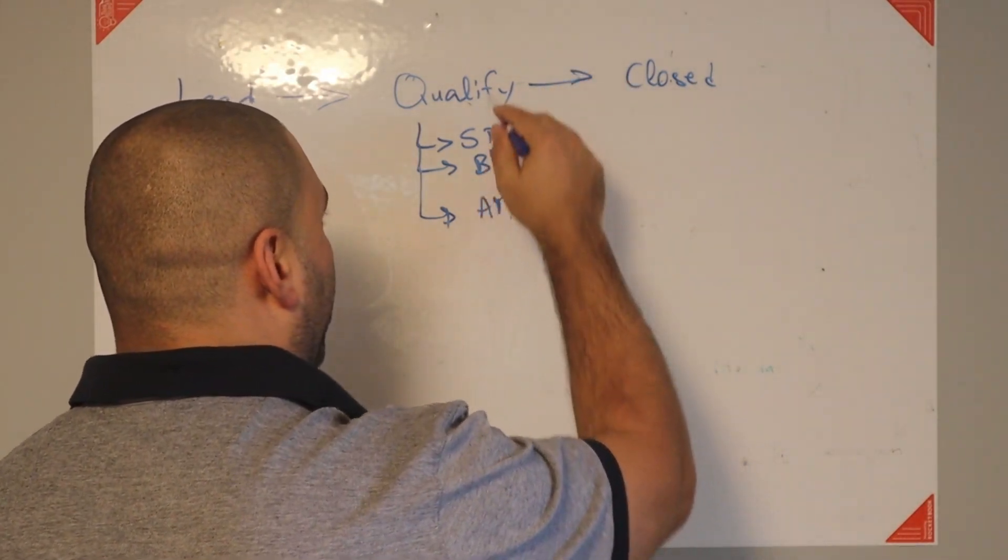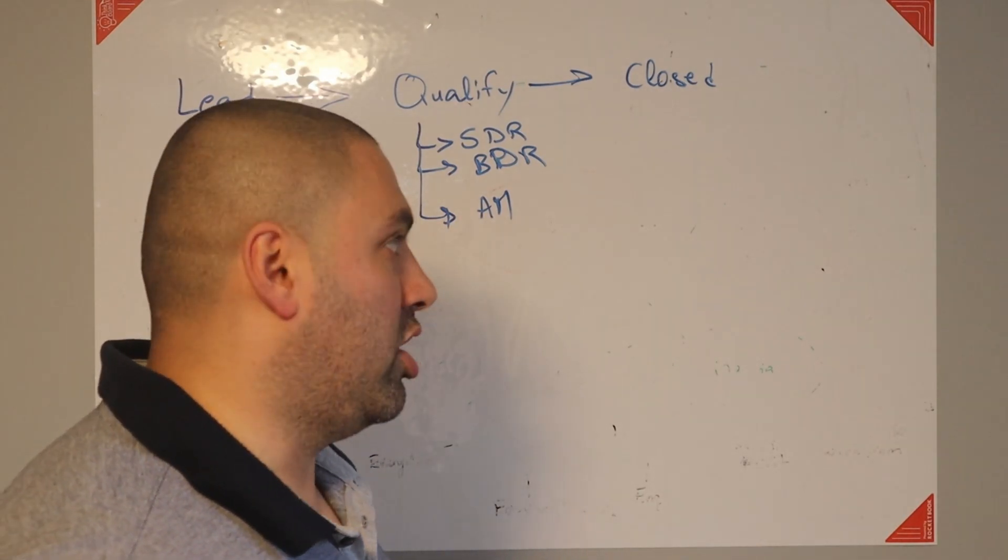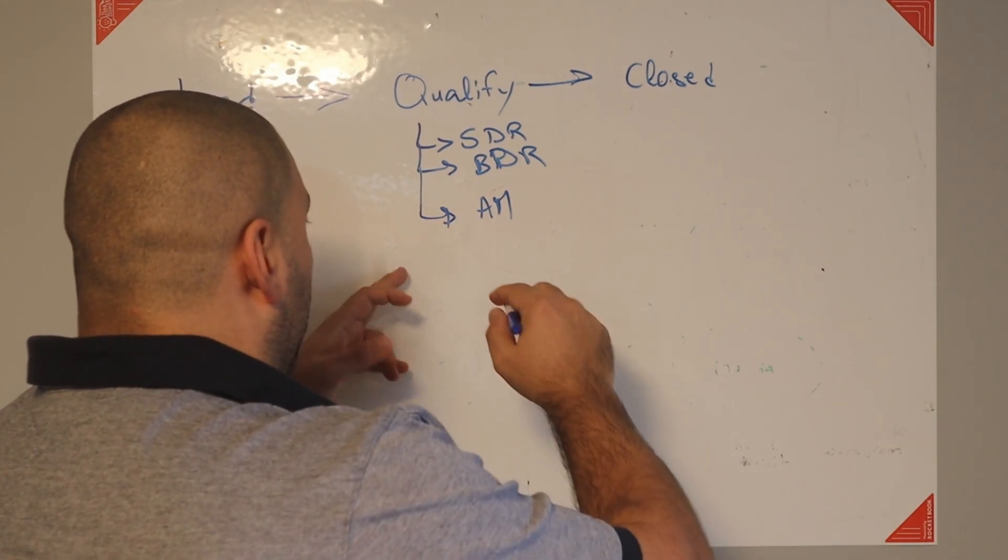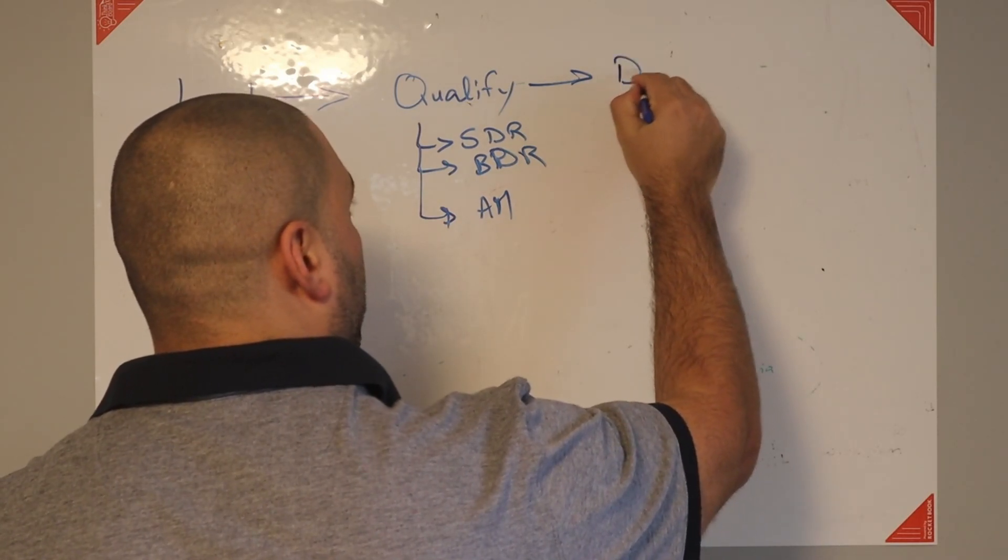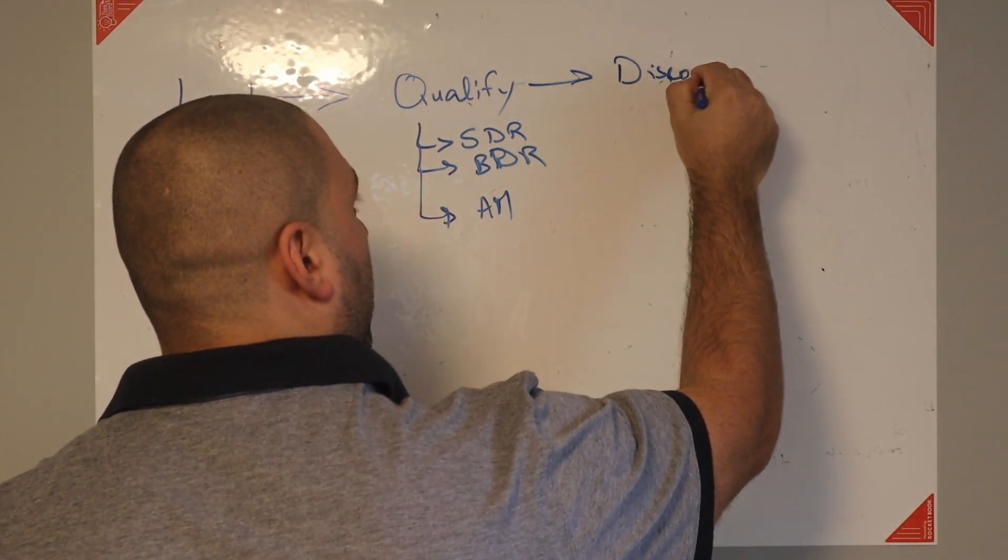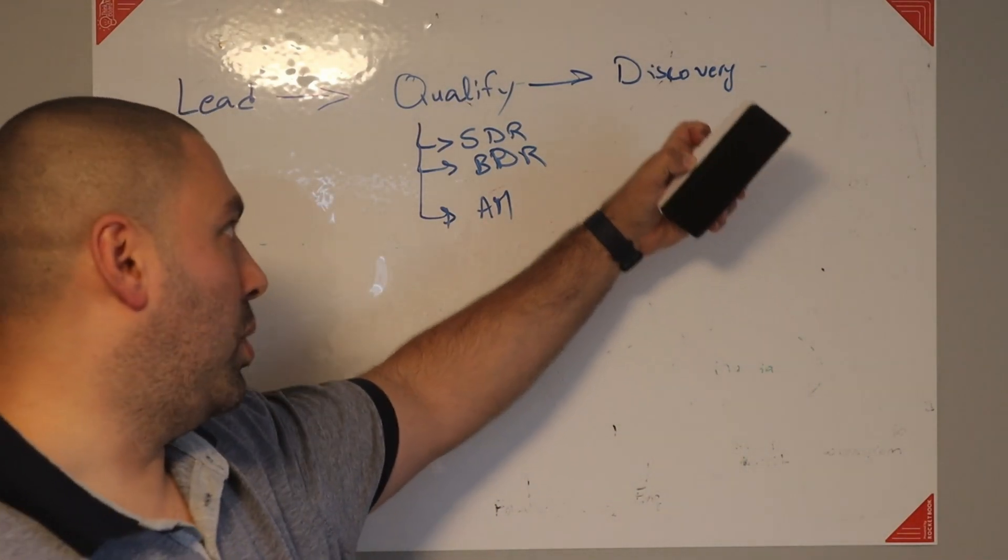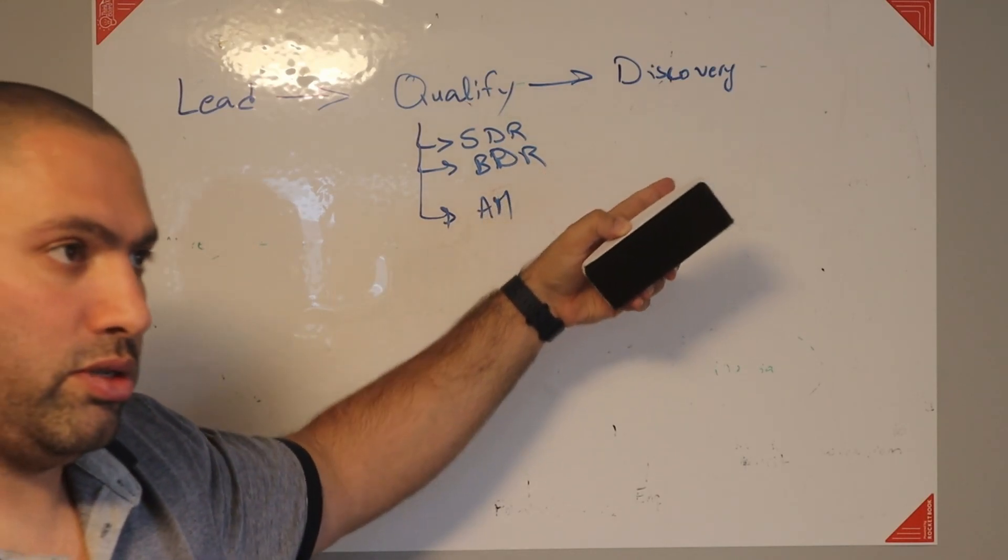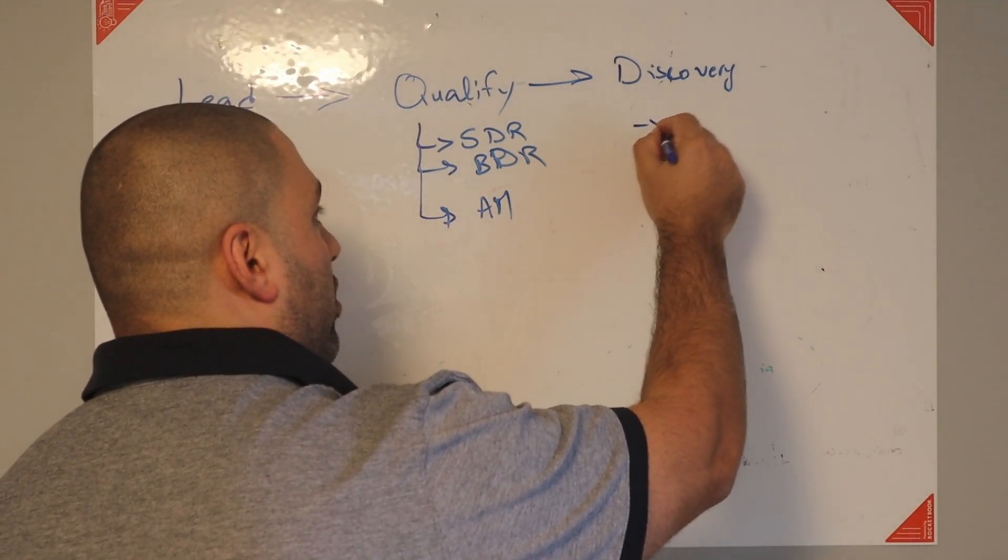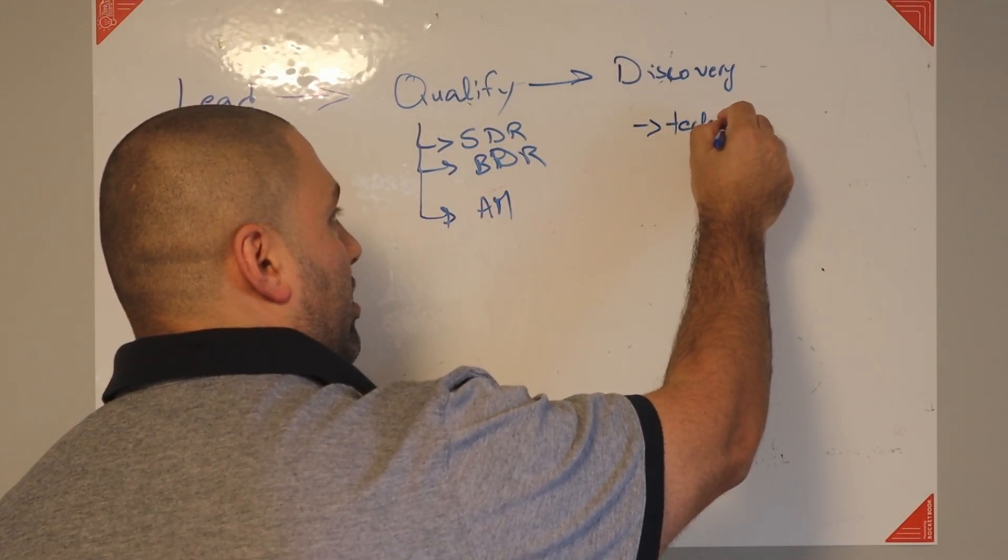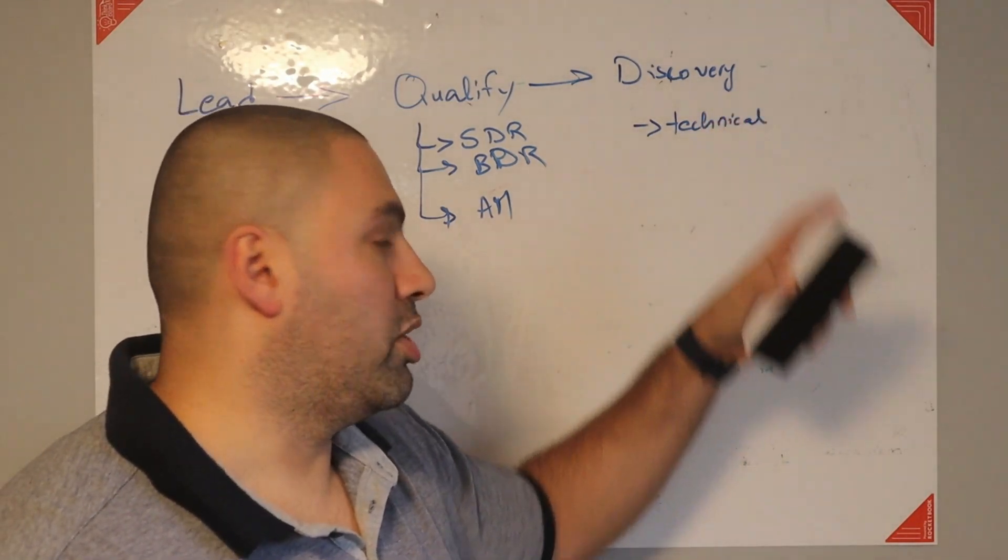Sometimes the AM might qualify it, and maybe they did a good job, maybe they did a bad job. But then the SE comes in and is part of the discovery call. That's very dependent on the organization you work with. Sometimes SEs are not involved. That's why I think SEs should be involved because they can get to no faster. And one of the goals that SEs have and salespeople have is to get to no. And here we're looking for basically a technical fit. They have a problem, a business problem, technical problem, whatever it is. We want to make sure that it fits.